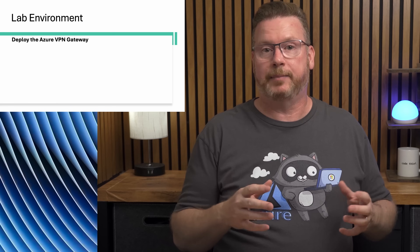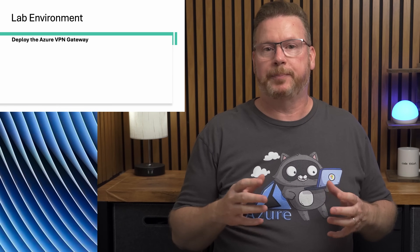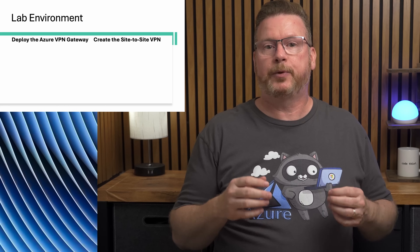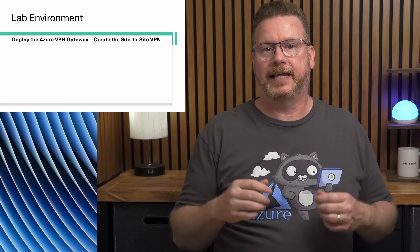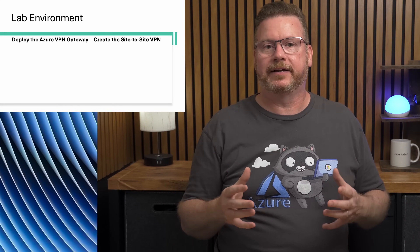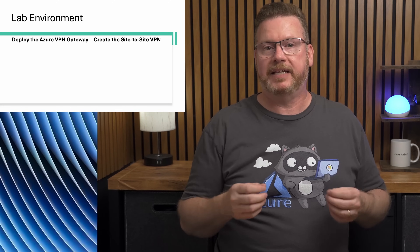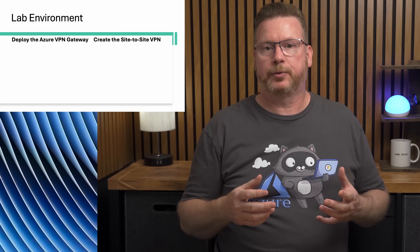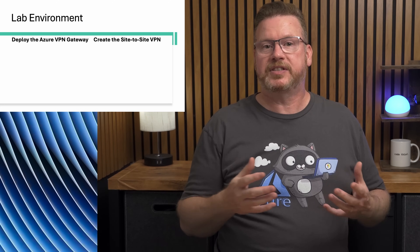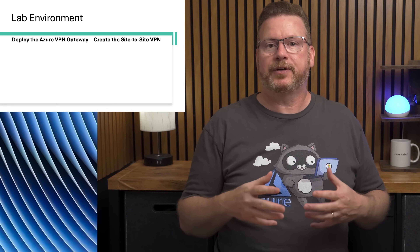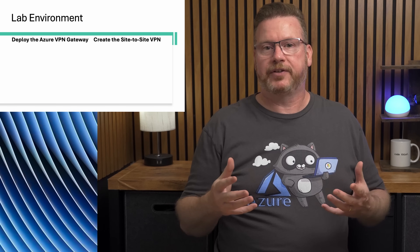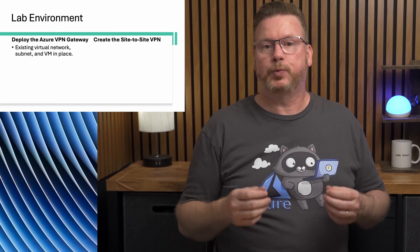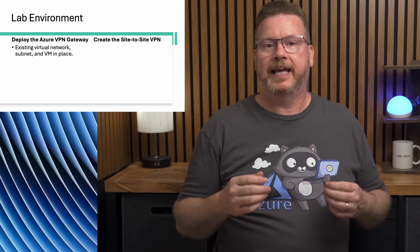Let's talk about the lab setup. There are two main parts for this demo: first we'll deploy the Azure basic VPN gateway, then we'll create a site-to-site VPN connection with the Ubiquity Cloud Gateway located in my lab. Even though the demo uses Ubiquity gear, most IPsec-based VPN devices follow similar steps, so if you're using a different firewall or router this should still give you a solid starting point. Check your vendor's documentation for specific settings.